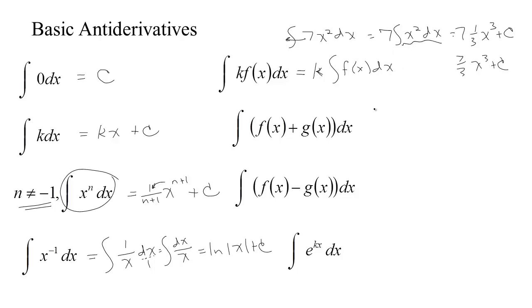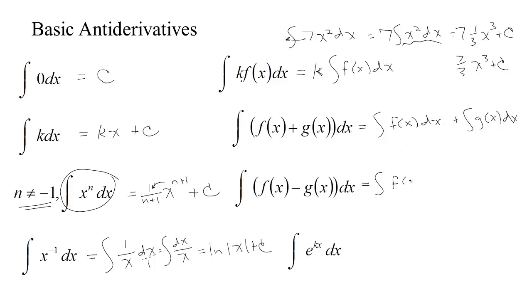So that should be x cubed with a 1 over 3 out front, since n is 2 and n plus 1 is 3, giving us 7 thirds x cubed plus c. If you have a sum of two functions, the derivative of the sum is the sum of the derivatives, so running that backwards, the integral of the sum is the sum of the integrals. Same thing for a difference — the derivative of the difference is the difference of the derivatives, so the integral of the difference is the difference of the integrals.